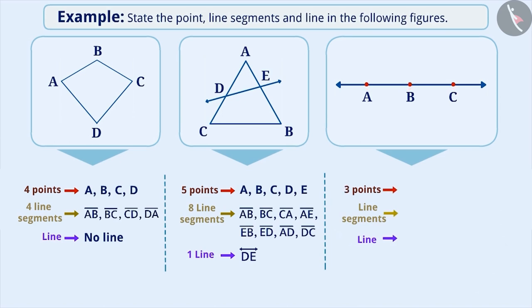Let me help you. There are three points here called point A, point B and point C. There are a total of three line segments in this figure such as line segment AB, line segment BC and line segment AC.